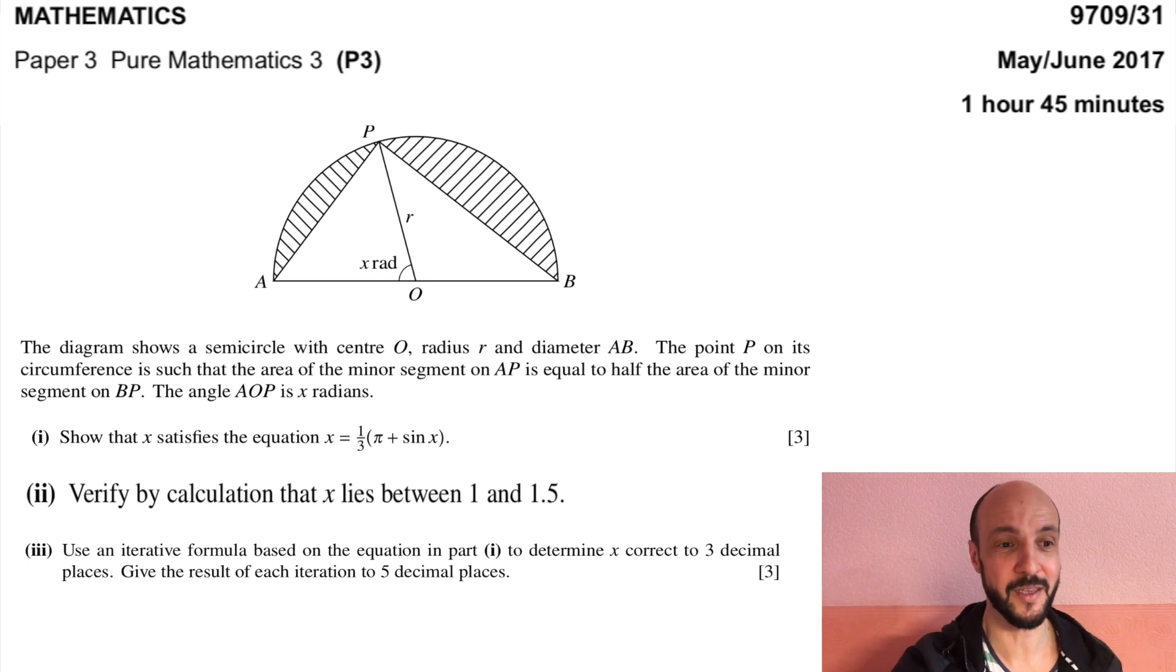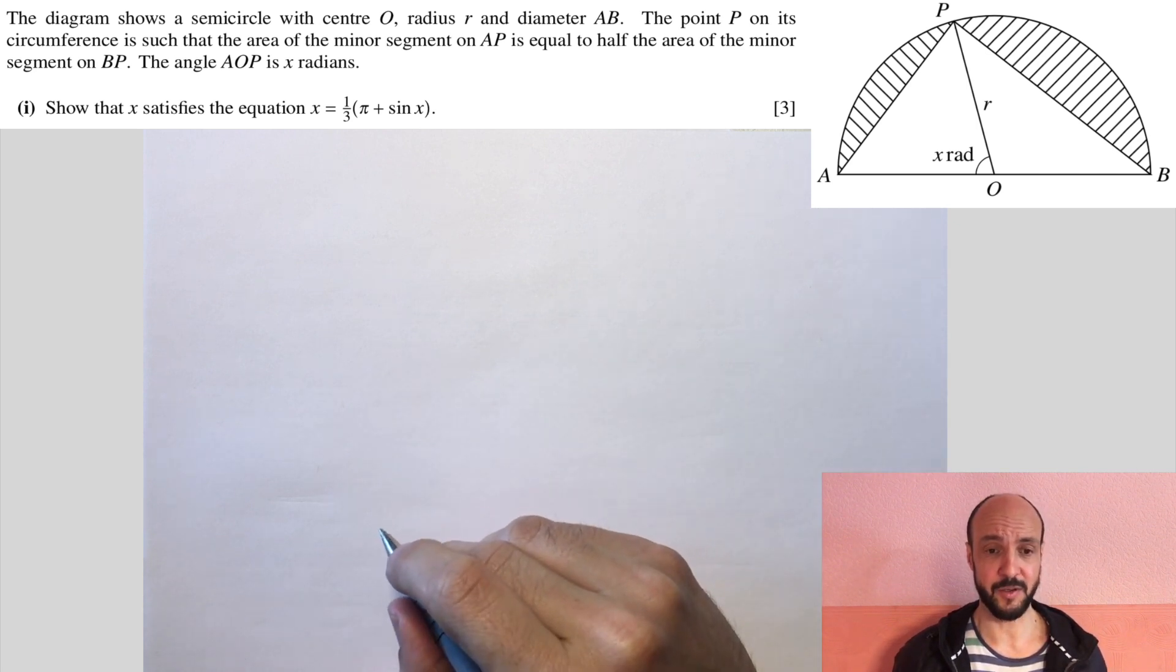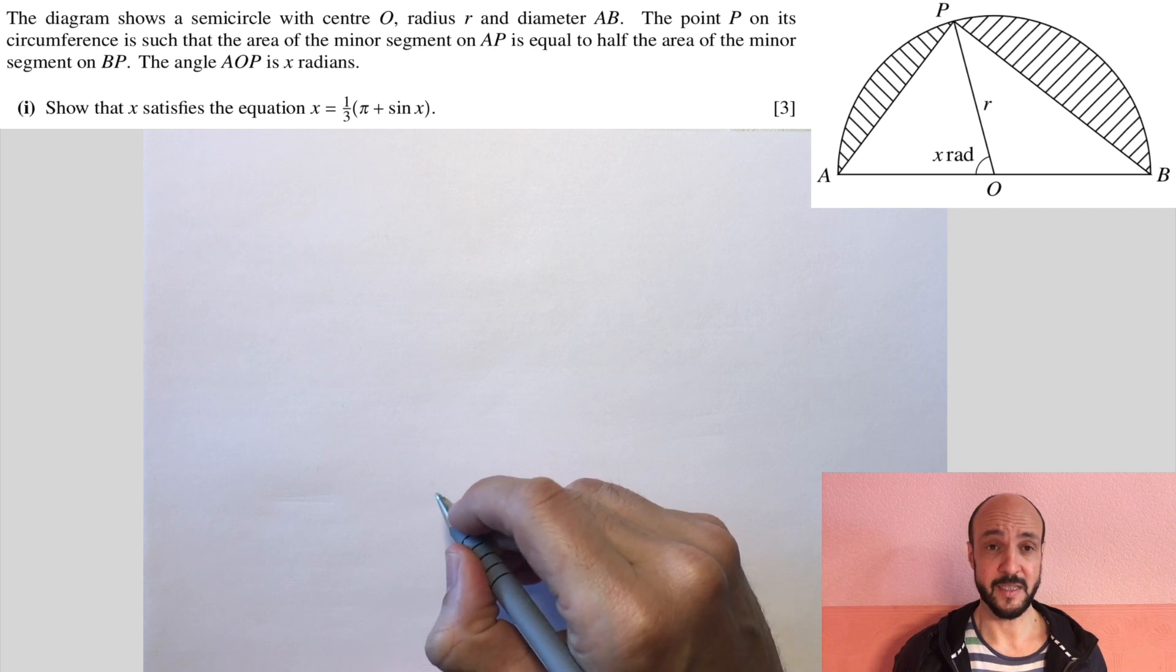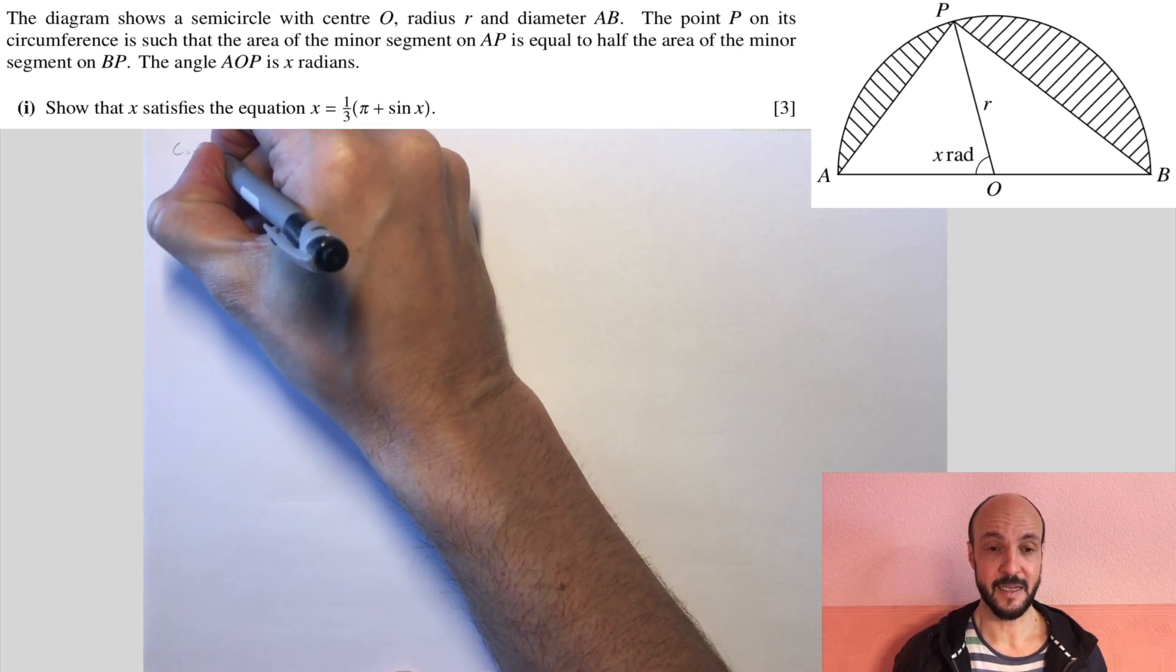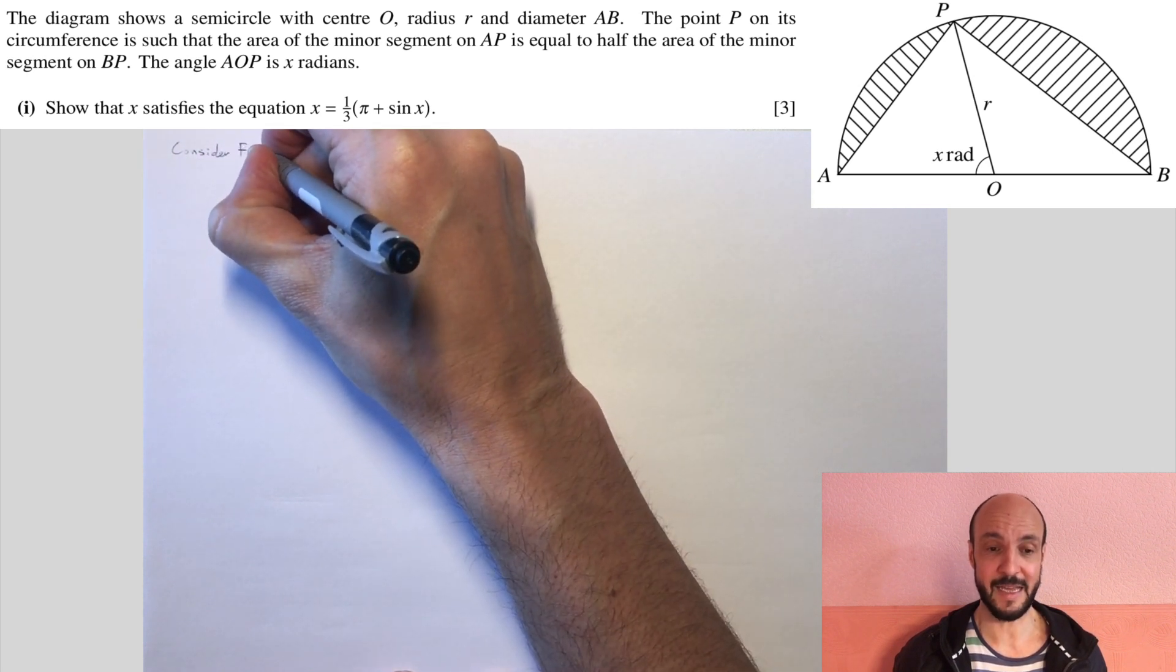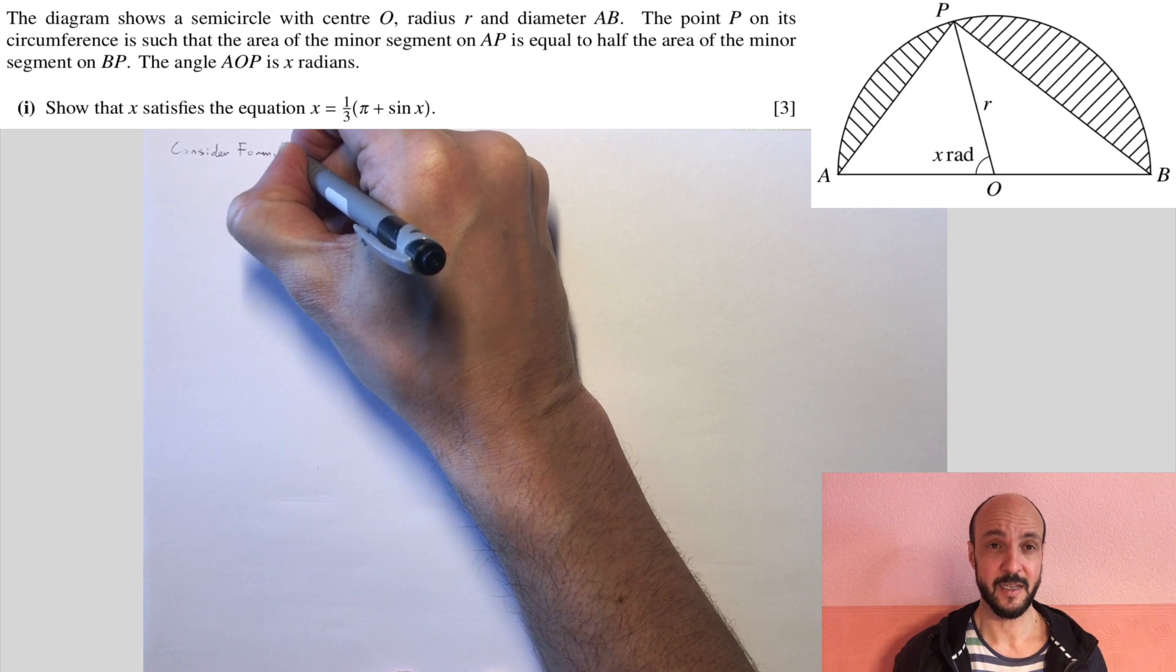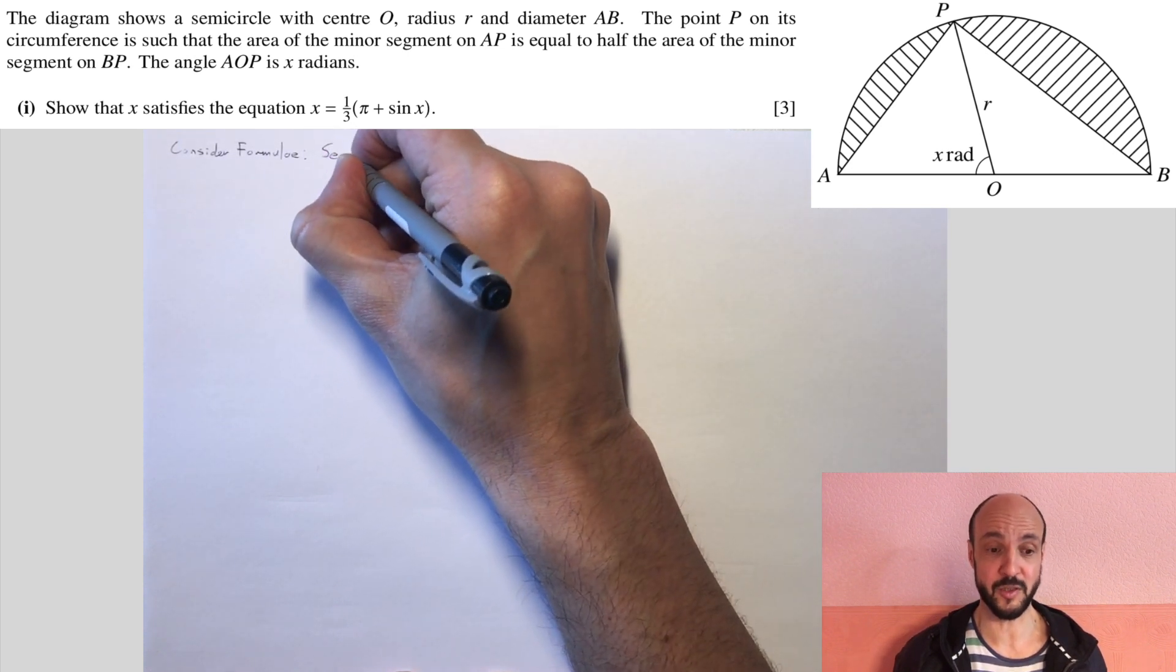So let's go ahead and solve the question. We've got to make this equation x equals a third of pi plus sine x and we've got a semicircle. We can see two sectors. Remember, sectors are like pizza slices and we can see two segments shaded in and we're told about a relationship between the two segments.